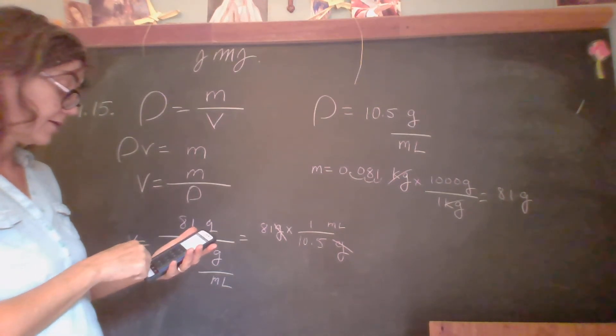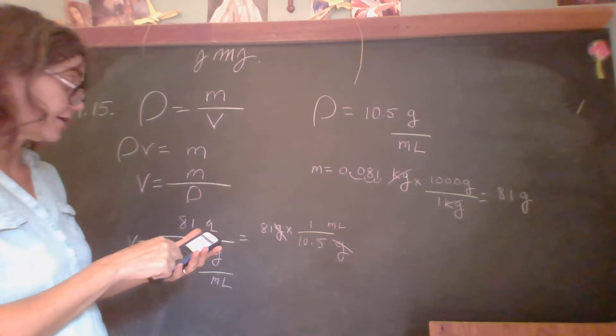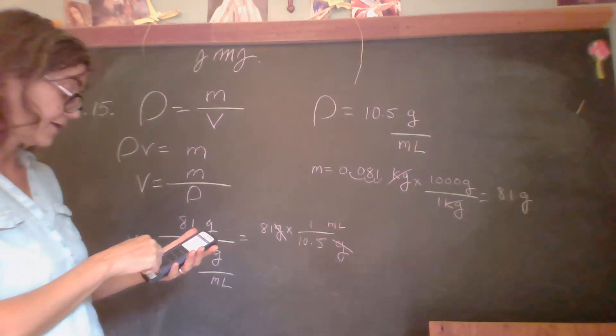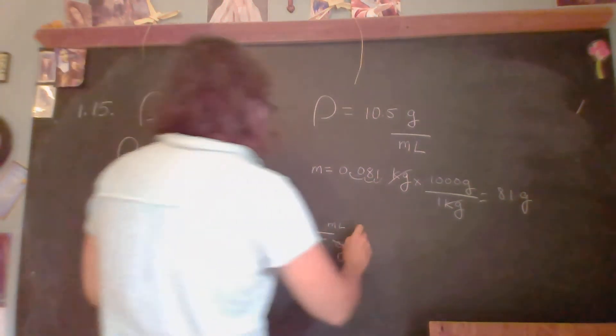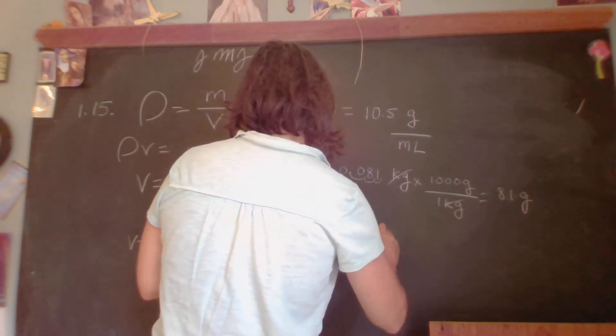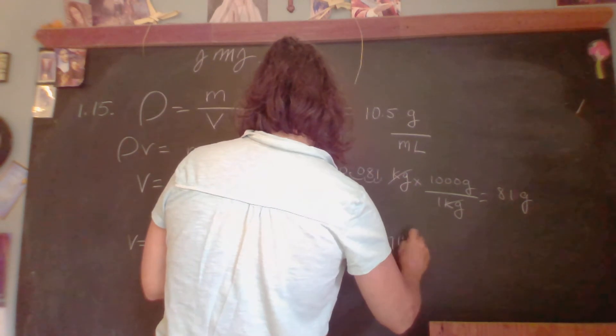Let me clear and try again. 81 divided by 10.5. There we go. That looks better. 7.7142.